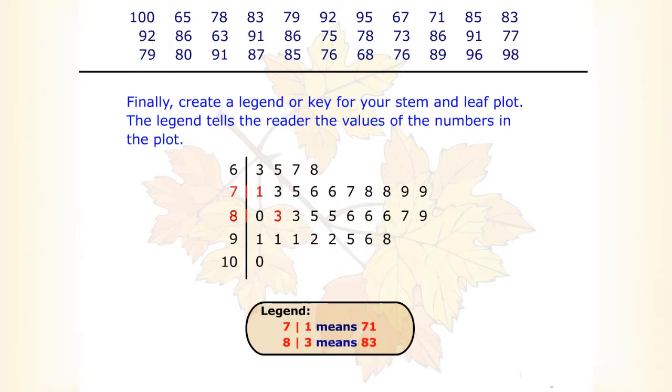Finally, create a legend or key from your stem and leaf plot. The legend tells the reader the values of the numbers in the plot. Here, 7 and 1 means 71.